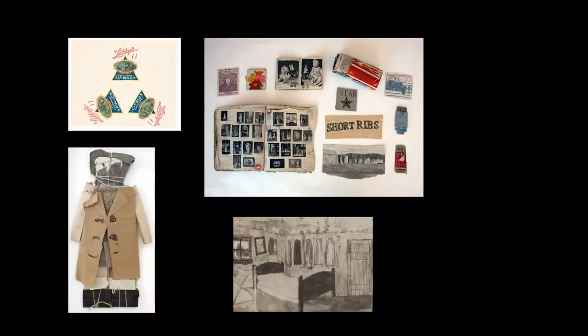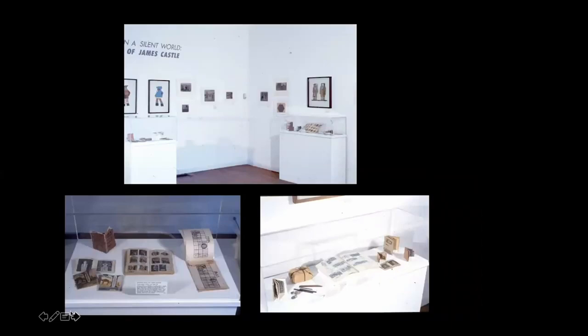Here are some other examples of his work showing the types of subjects he was interested in. We can also think about how, given the time, location, and everything, we came to know the work of James Castle at all. The short answer is that Castle's nephew attended art school at the Oregon Museum of Art school and showed his work to one of his teachers.